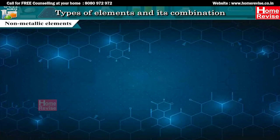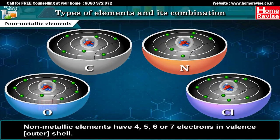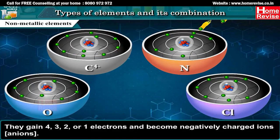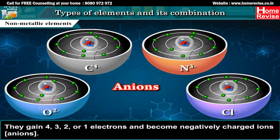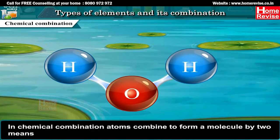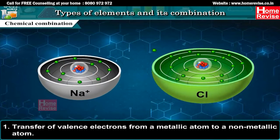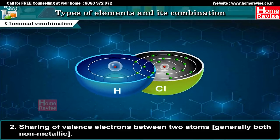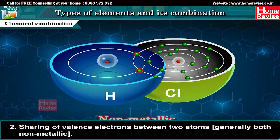Non-metallic elements have 4, 5, 6 or 7 electrons in the valence, i.e. outer shell. They gain 4, 3, 2 or 1 electrons and become negatively charged ions — anions. In chemical combination, atoms combine to form a molecule by two means: transfer of valence electrons from a metallic atom to a non-metallic atom, or sharing of valence electrons between two atoms, generally both non-metallic.